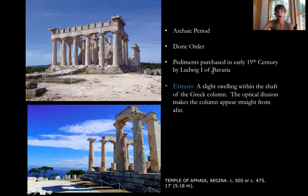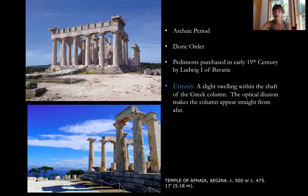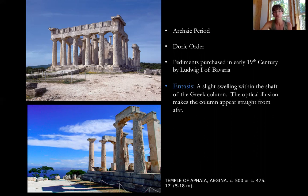One more term that comes up a lot with any discussion about Greek temples and columns is entasis. This is a slight swelling within the shaft — the center part of the column. What this does is give us as viewers an optical illusion that makes the column appear straight from afar, even though it's slightly tapered and not actually straight. Don't worry too much about that term.